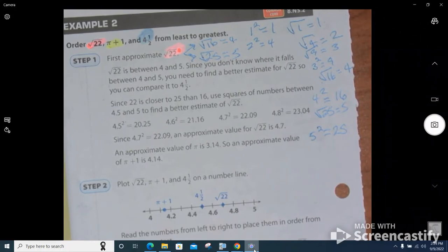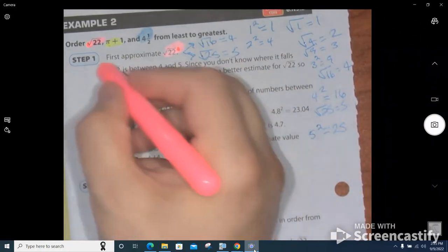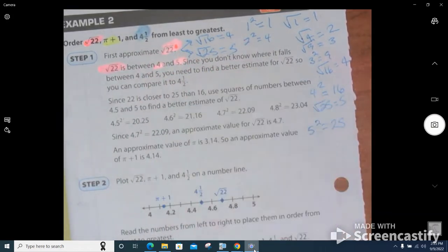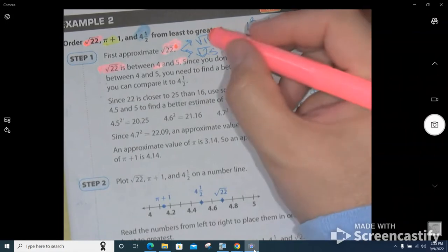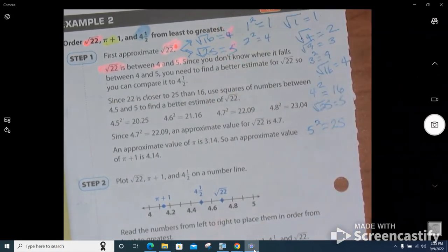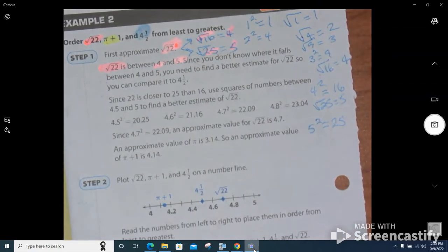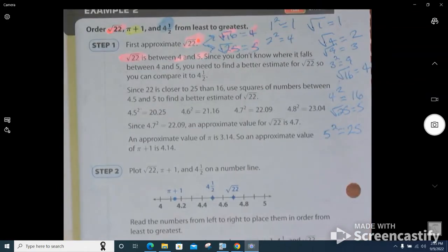Does that make sense? So I wrote it out so you can see it, but they say it right here. The square root of 22 is between four and five. So why? Because it lives between the square root of 16 and the square root of 25, which is actually four and five. So I know I went kind of fast on that. How do you guys feel about what I just said? Thumbs up if you get it. Thumbs down if you're completely lost.